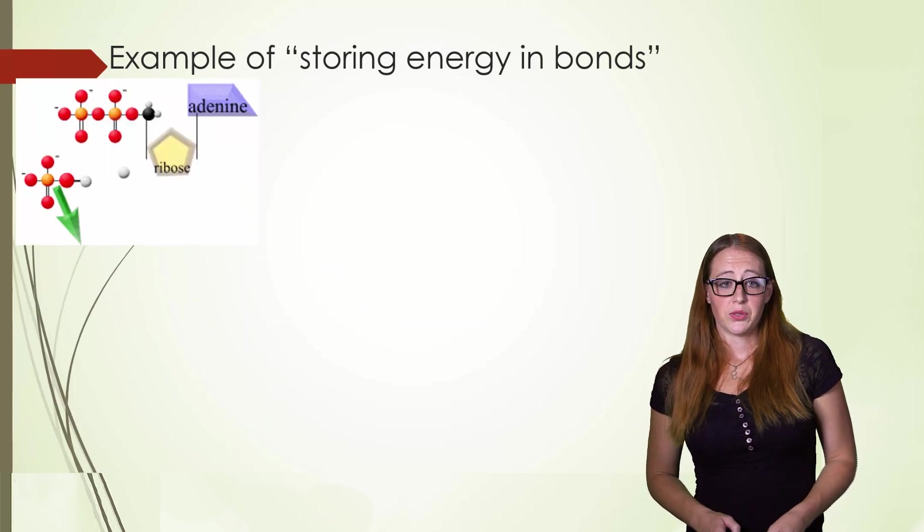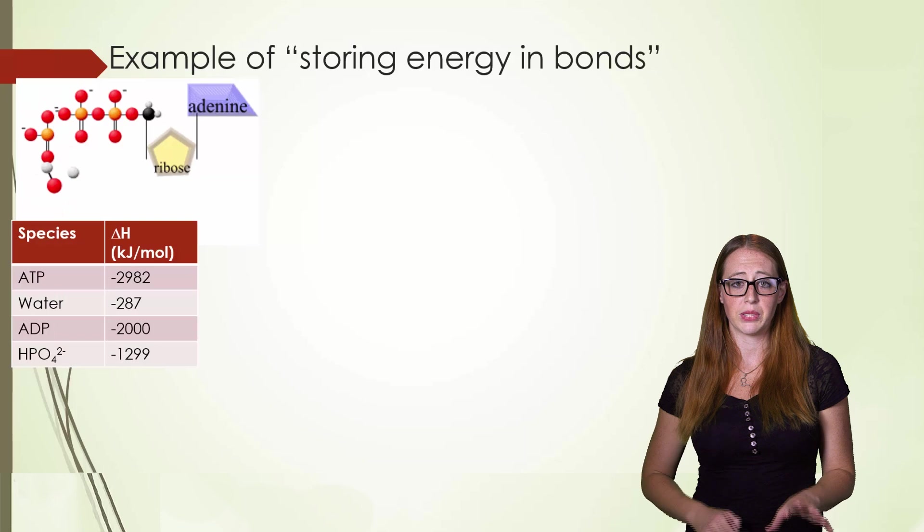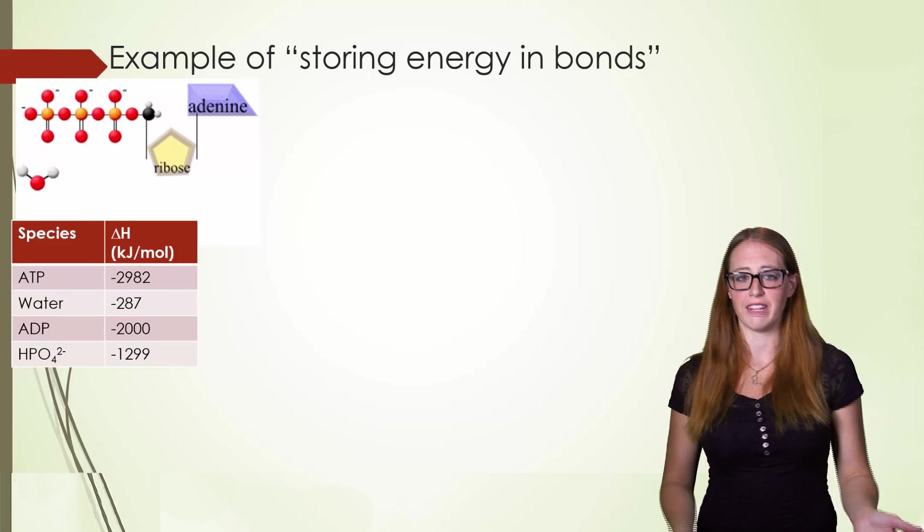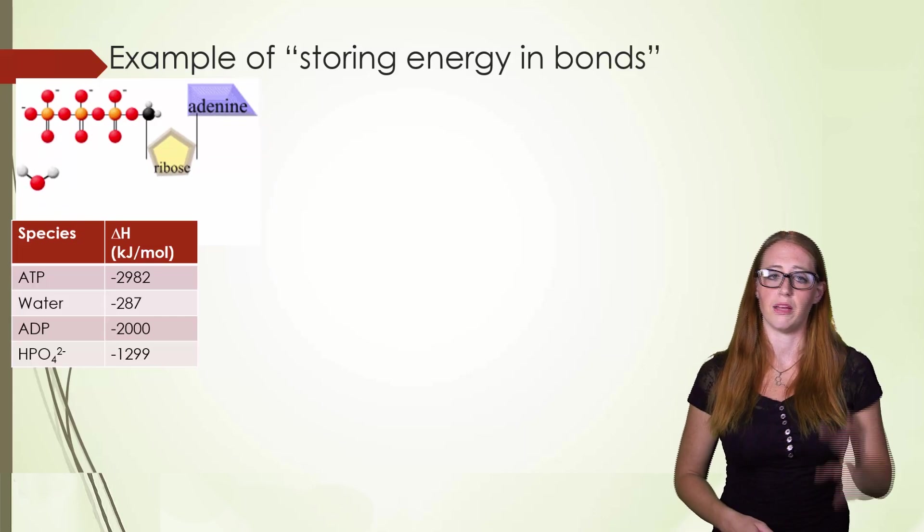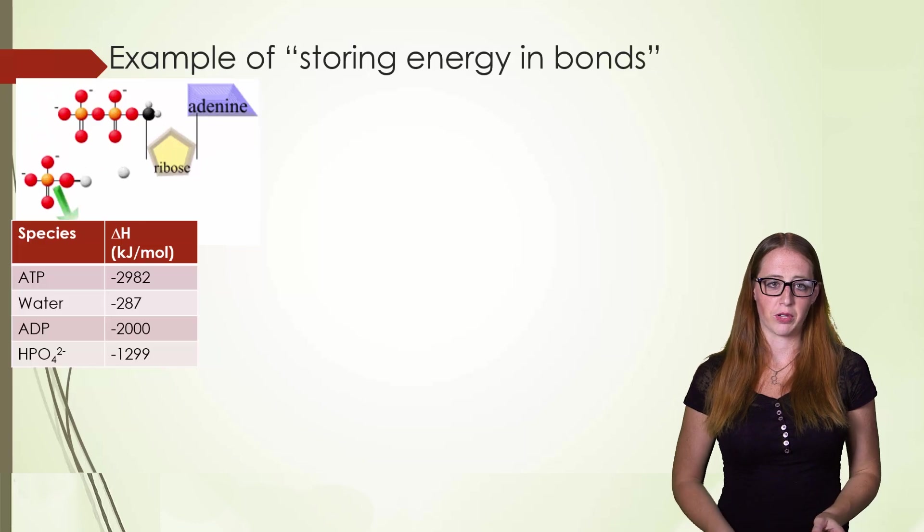So let's look at the following values. So here I have the same diagram just to kind of help you see what's happening as we go through this. I have a table of values for you because you probably aren't going to find ATP in a standard chem book. You'd probably have to go to some sort of biology book or external source for that. And then the water the ADP and the HPO4 2-.